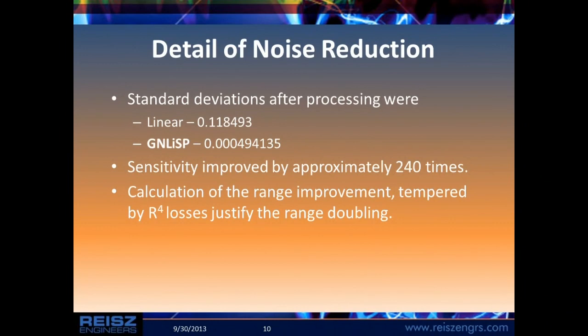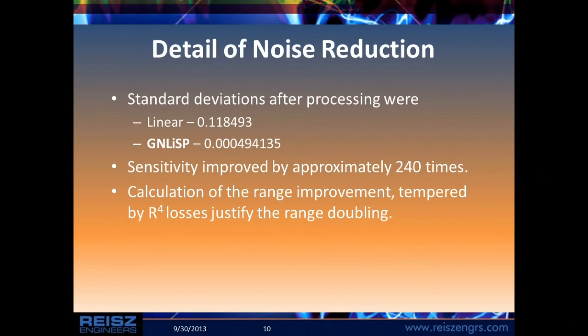Standard deviations after processing for linear was about 0.11. With the GenLISP process it was much smaller — a 240-times improvement in accuracy. Calculation of the range improvement was tempered by R⁴ losses, and we can approximately double the radar range with the radar we were simulating. The 240-times improvement in radar accuracy and the two-times improvement in radar range are actually similar kinds of numbers: in the radar world we look at 240 times the radar cross section, which is approximately 15 to 16 times the actual radius. Doubling the range requires approximately 16 times the power.